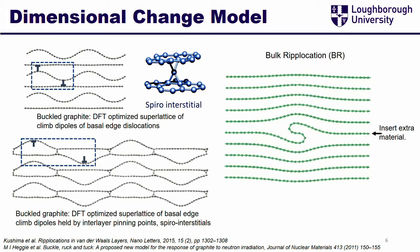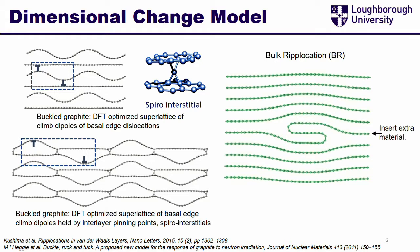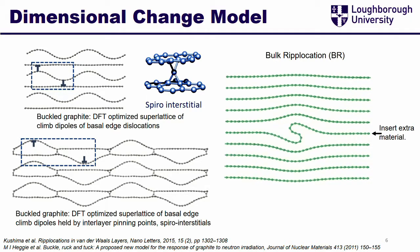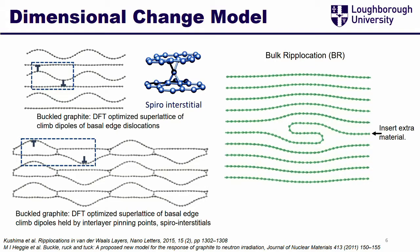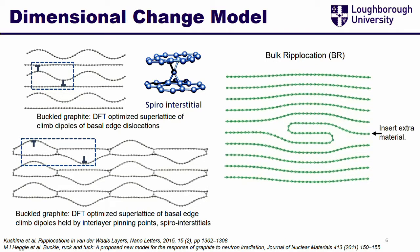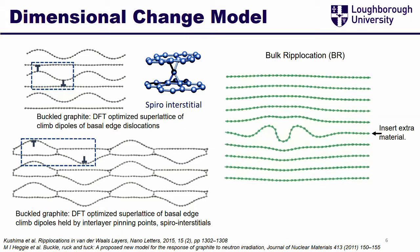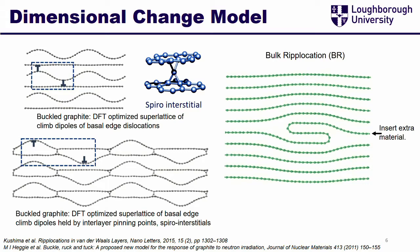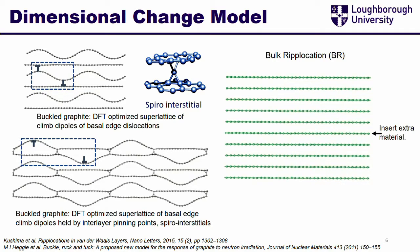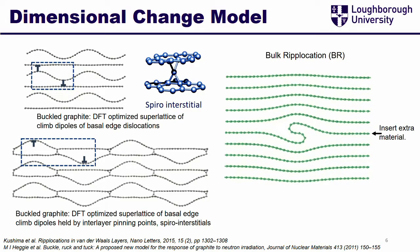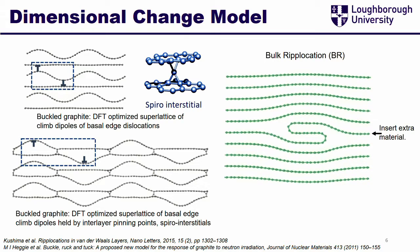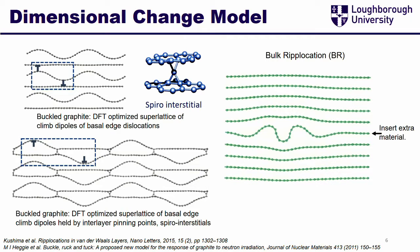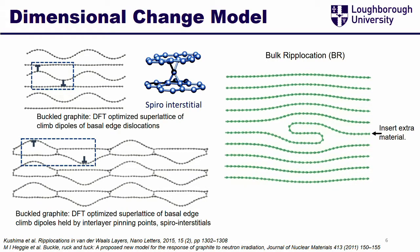These are some slides from Malcolm's work. This is Malcolm's model, which has already been talked about a lot — his ruck-and-tuck model. If you insert extra material here by gliding dislocations, they form this buckle, and it rugs and tucks underneath like that, forming a sort of extra partial layer in the middle. This causes expansion in the C direction.